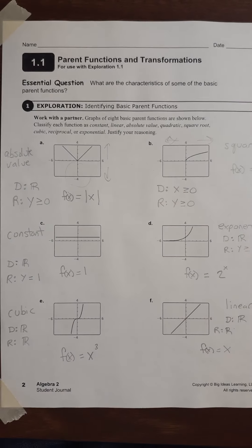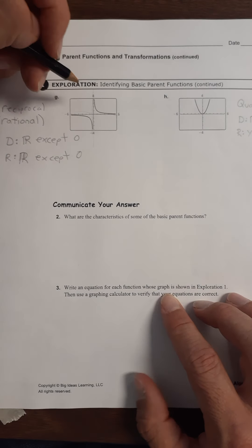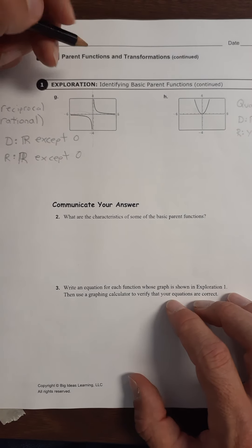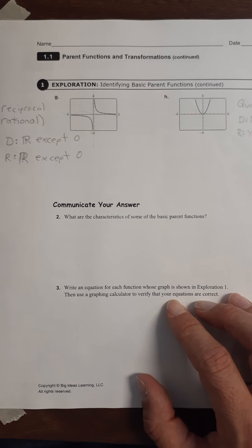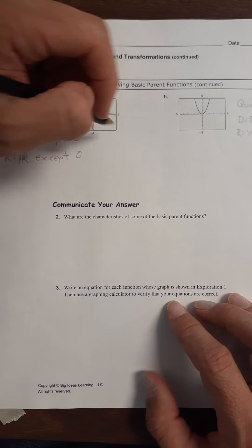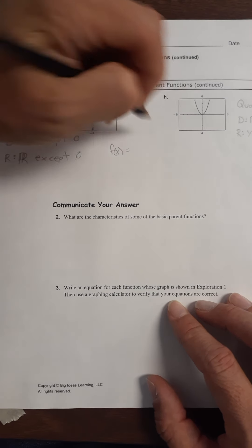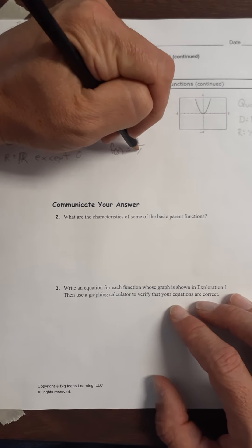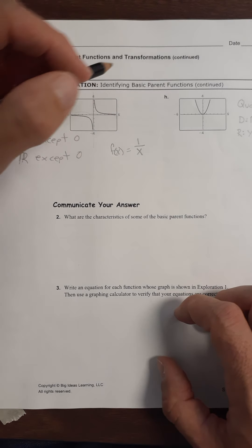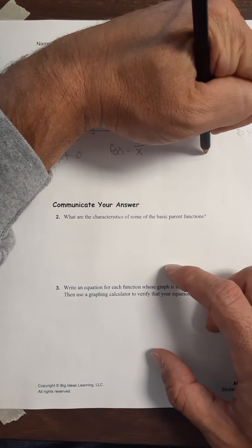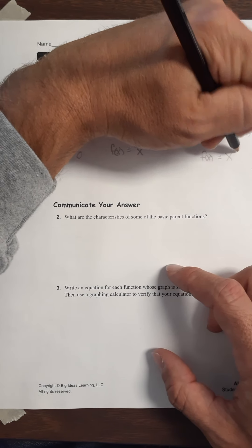Let's go on to page three to wrap it up. We have the reciprocal — we're calling it reciprocal, and we'll also call it rational often as well. f(x) equals one over x. And finally, for the quadratic, f(x) equals x squared.